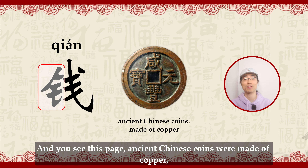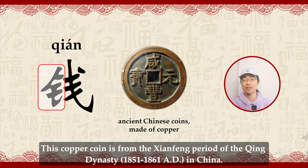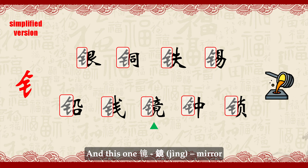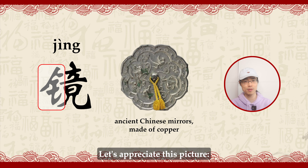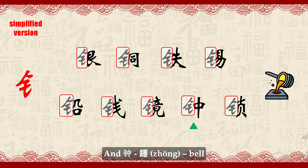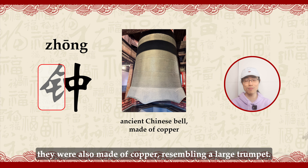For example: ancient Chinese coins were made of copper, so money naturally belongs to the metal family. This copper coin is from the Xianfeng period of the Qing dynasty — it looks very beautiful. Next, Jìng (镜), meaning mirror — in ancient China, mirrors were made of copper as well, and this mirror is very exquisite and elegant. And Zhōng (钟), meaning bell — ancient Chinese bells were also made of copper, resembling a large trumpet.